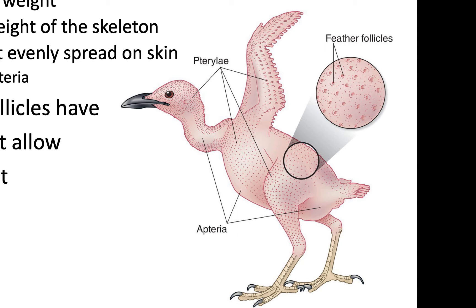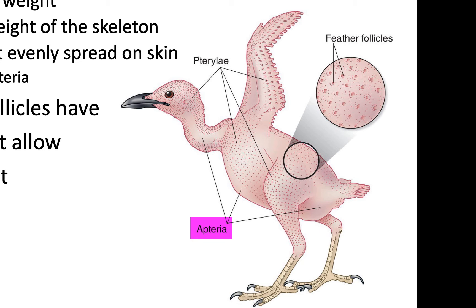This uneven distribution is a weight-saving, feather-reducing capability. The feathered regions are called pterylae, shown stippled in diagrams. The parts that feathers do not grow from are called apteria. This arrangement not only reduces weight but also serves other purposes — in hot environments, allowing wind to reach bare patches helps birds thermoregulate.